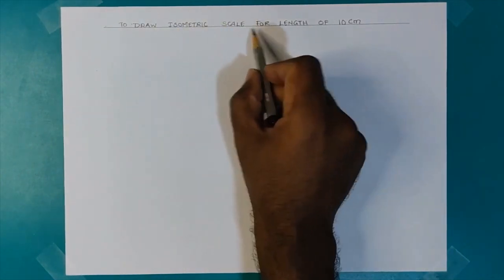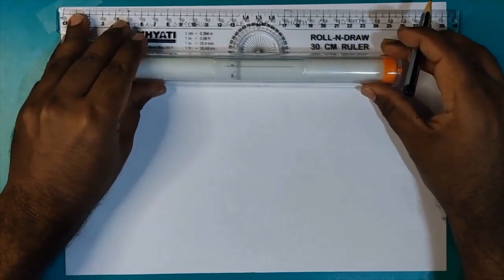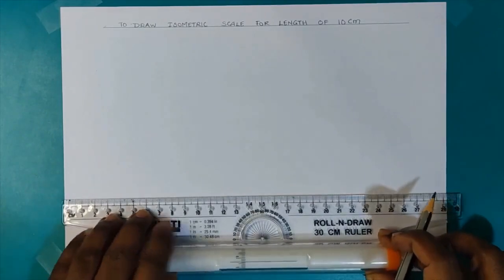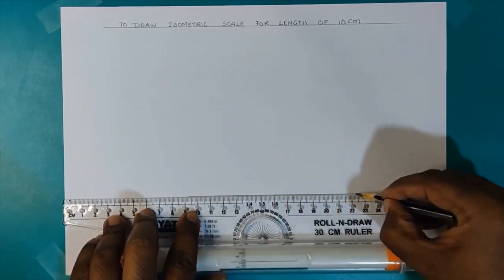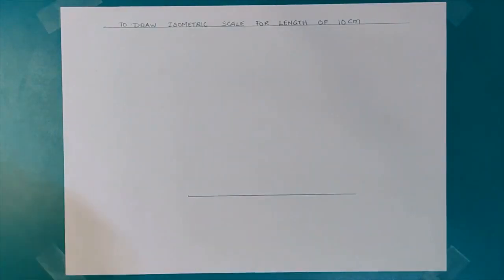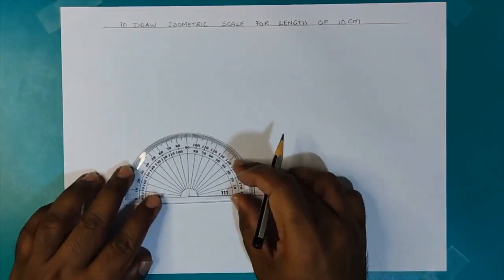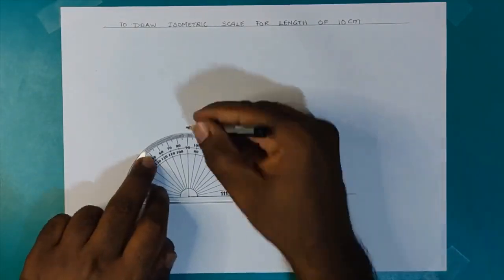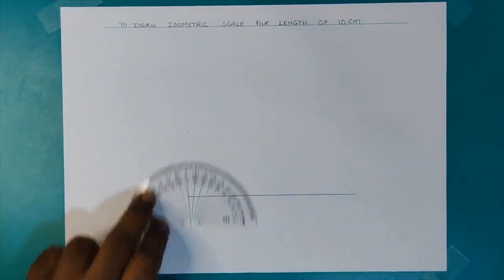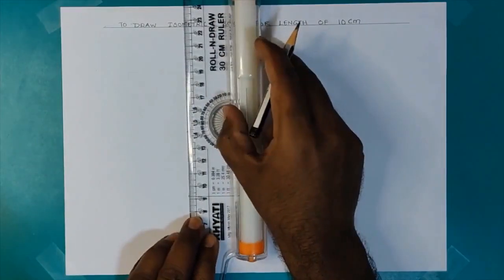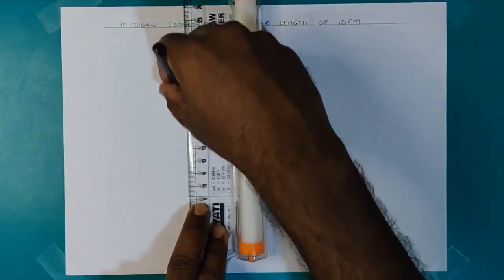We start first by drawing a horizontal, and using a protractor I draw a vertical to the horizontal line. This gives me the axis line.